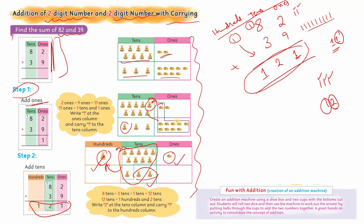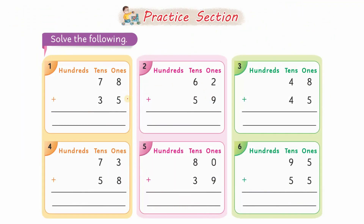یہ تھا addition of two-digit number with two-digit number using carrying۔ اب practice section: کچھ questions میں کرواؤں گا اور کچھ آپ خود solve کریں گے۔ Eight اور five: eight plus five کرنے سے answer آئے گا thirteen۔ Thirteen کا تین ادھر لگ جائے گا — right side والا number اسی میں لگتا ہے — اور left side والا one آگے carry کر لیتے ہیں، اوپر circle بنا دیں۔